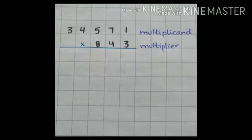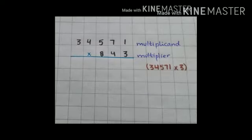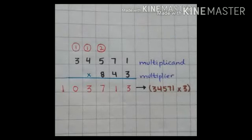You know, start hamesha right side se karna hai, matlab unit place se. Now hum pehle step mein multiplier ke units value mein jo 3 maujud hai, hum usse multiply kareenge. Like 34,571 multiply by 3. So now hum multiply kareenge: 1 times 3 is 3, so 3 write kareenge.